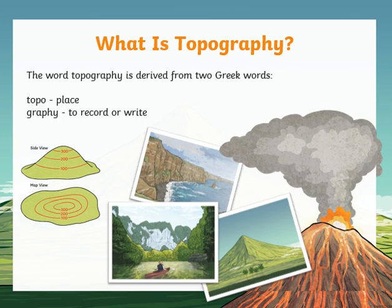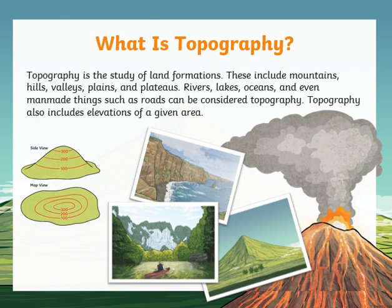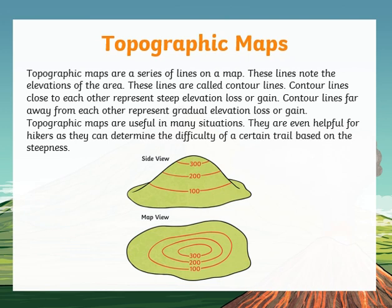We are going to discuss topography regarding science and geology, or the Geosphere, by analyzing topographic maps. We will look at different maps that have a series of lines that we call contour lines. These represent how steep or how elevated the landform is, and the closer the lines are, the more steep it is.